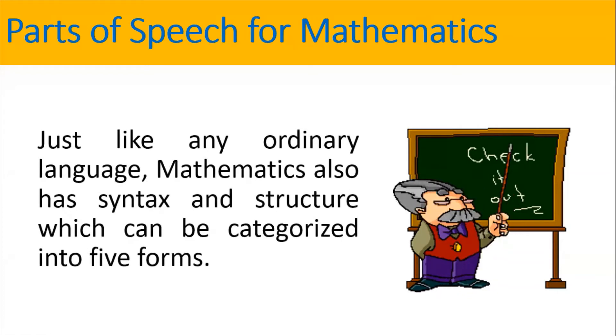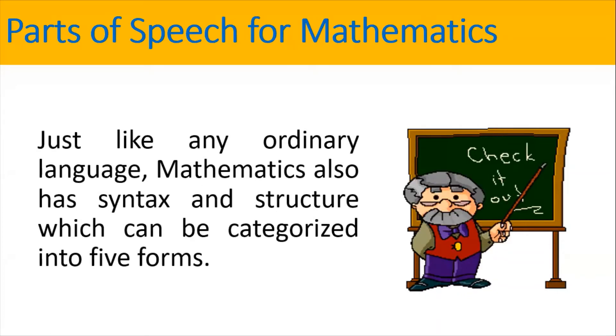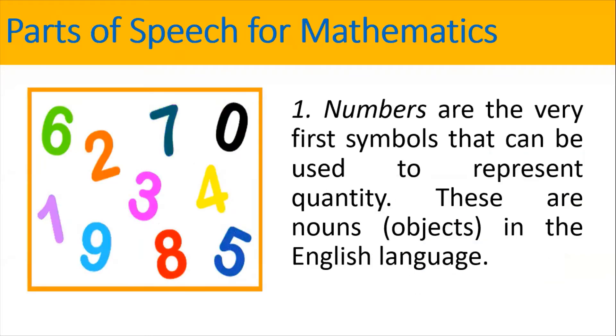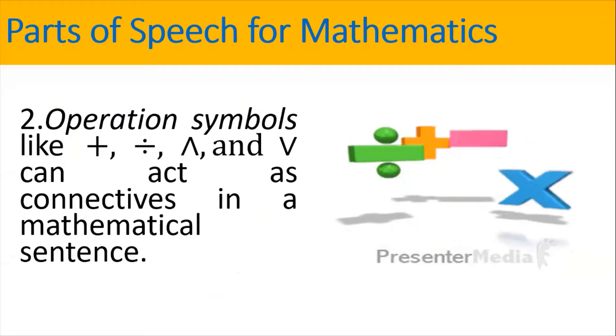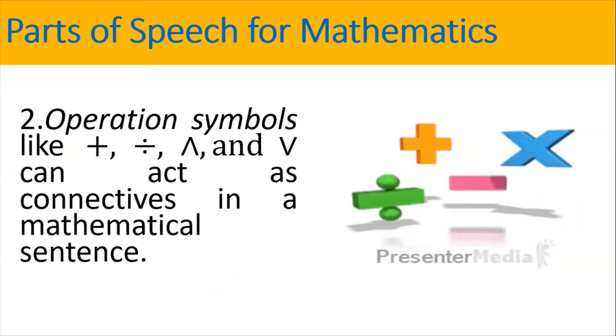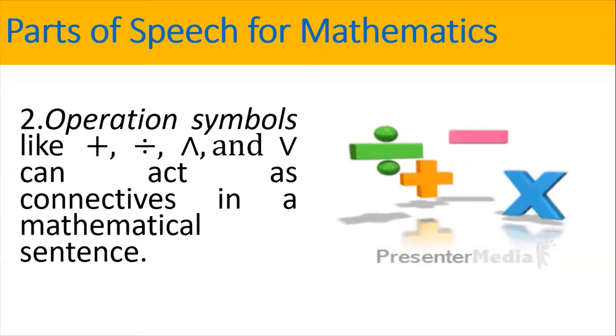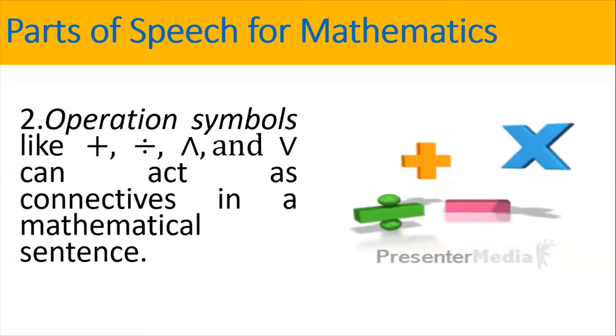Just like any ordinary language, mathematics also has syntax and structure, which can be categorized into five forms. Numbers are the very first symbols that can be used to represent quantity. These are nouns in the English language. Relation symbols like addition sign, quotient sign, caret, and reverse caret can act as connectives in a mathematical sentence.